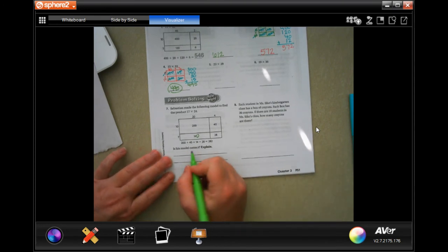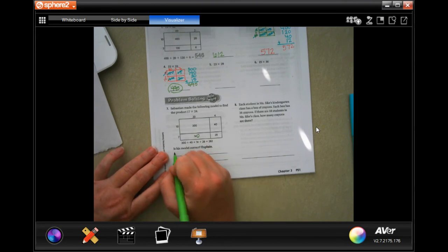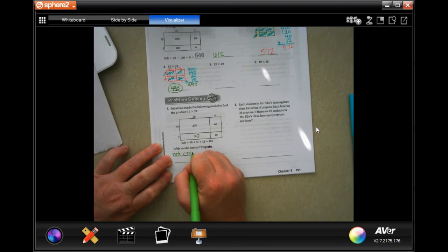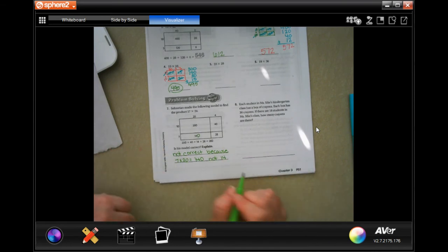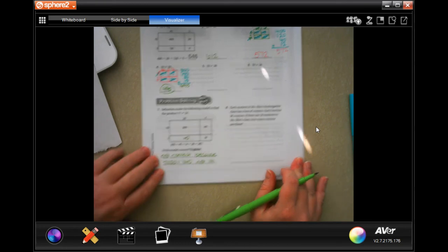So his model is not correct because 7 times 20 equals 140. Not 14. There we go.